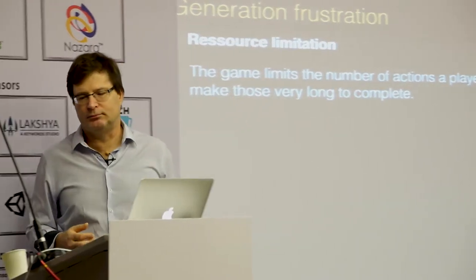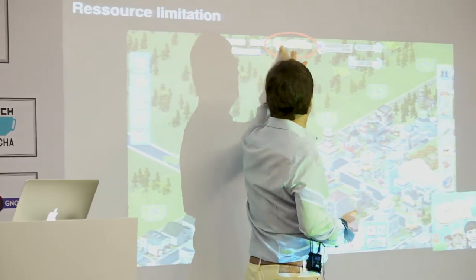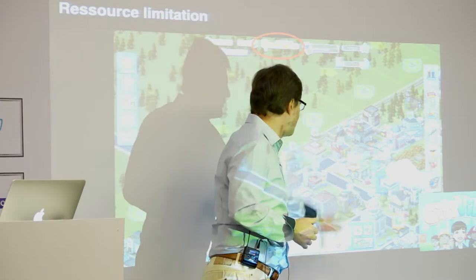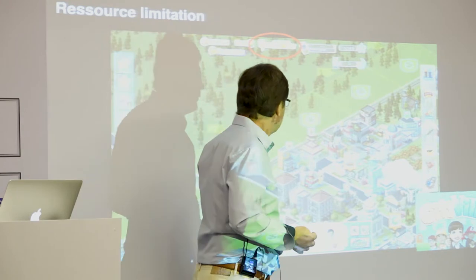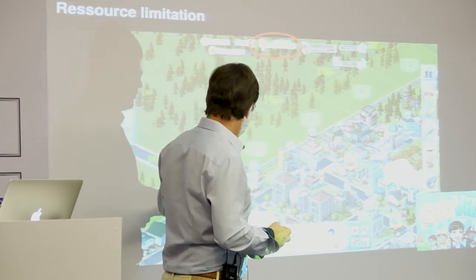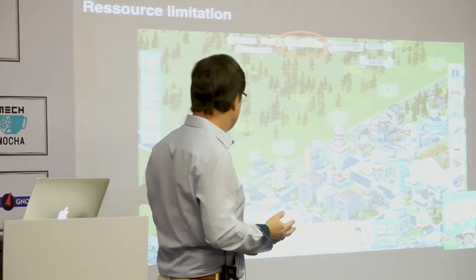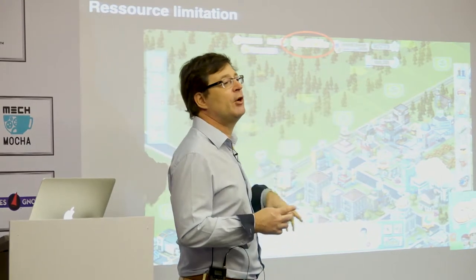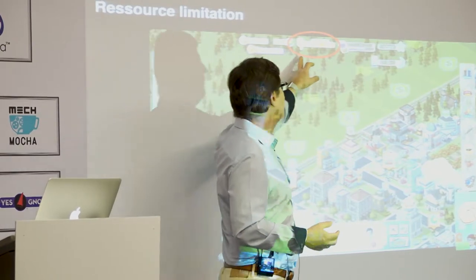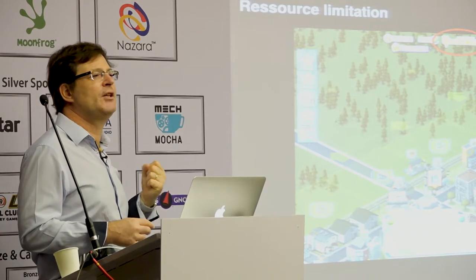The first tactic I call resource limitation — the game limits the number of actions you can do, or makes some actions very long. One good example is Cityville, where you have action points. Nearly everything you do in the city requires energy points. At first you have plenty, but eventually when you have a big city with plenty of buildings and fields generating resources, you discover you never have enough action points to do everything you want. That creates frustration based on the number of actions you can perform.